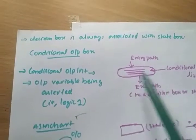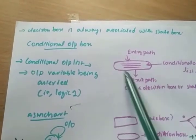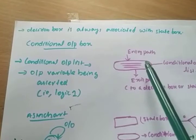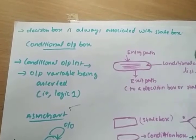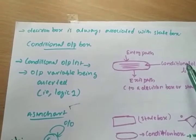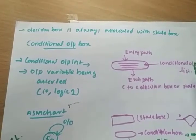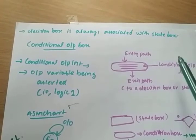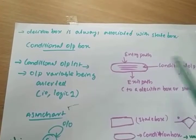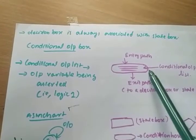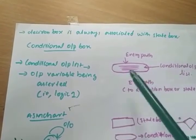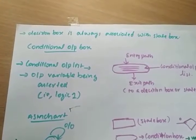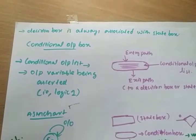One more thing: the condition box is normally drawn when there is an output of 1 — I am telling about a Mealy circuit. For a Mealy circuit, if the output is 1 we have to draw the condition box; if the output is 0 we do not draw it.